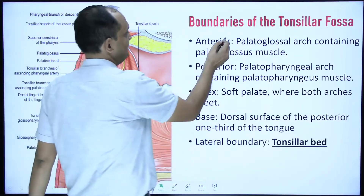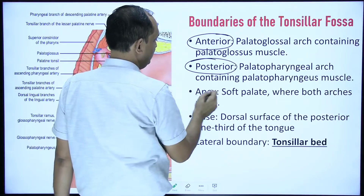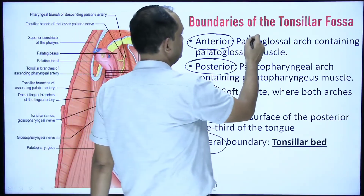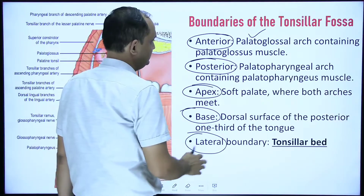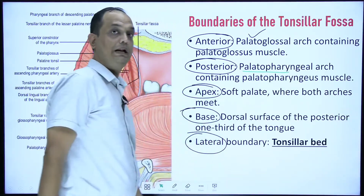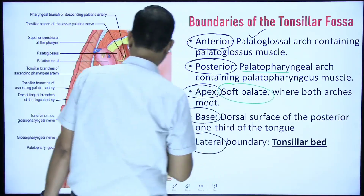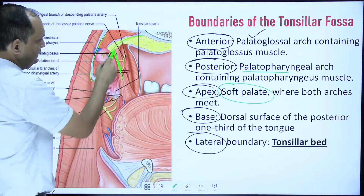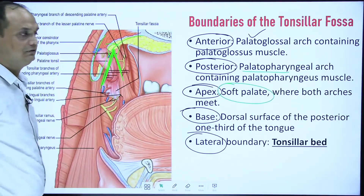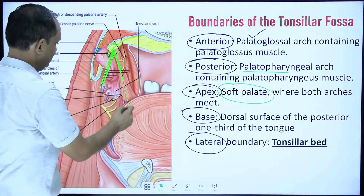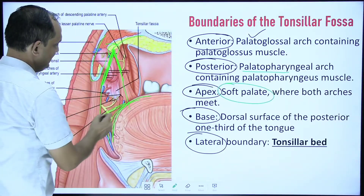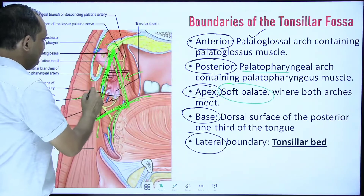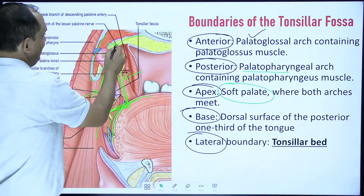What are the boundaries of the tonsillar fossa? The anterior boundary is formed by the palatoglossal arch, which contains the palatoglossus muscle. The posterior boundary is formed by the palatopharyngeal arch, which contains the palatopharyngeal muscle. The apex faces towards the soft palate, where the anterior and posterior pillars meet. The base goes towards the dorsum of the tongue.